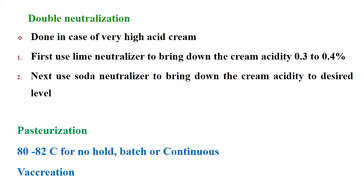After neutralization, the next process is pasteurization. In case of butter, pasteurization is done at 80–82°C for no hold, either by batch method or continuous method. Sometimes pasteurization can be done by vacreation — that is, pasteurization by creating a vacuum — which we have discussed earlier.